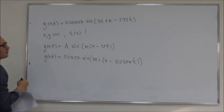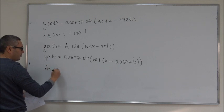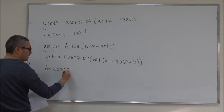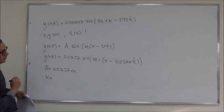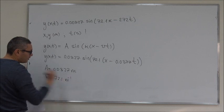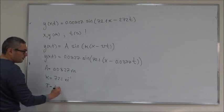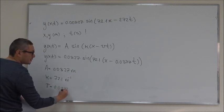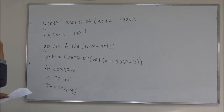Well, there are a few things that you can conclude from here. First of all, the amplitude is equal to 0.0327 meters, the wave number is 72.1 inverse meters, velocity of the wave is 0.0377 meters per second.